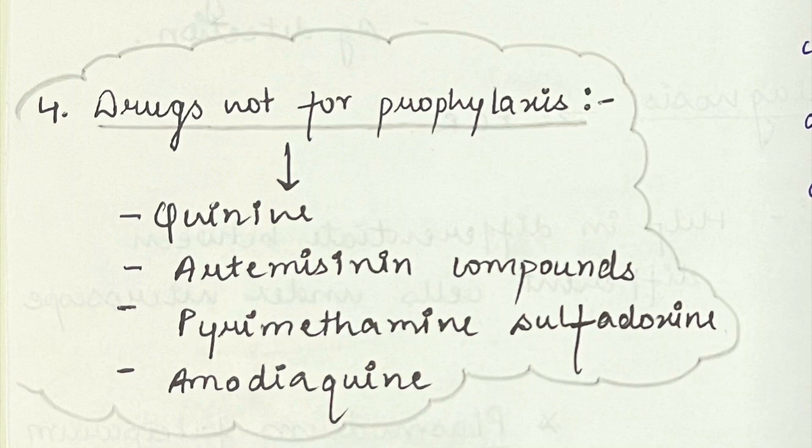The drugs used for prophylaxis are chloroquine, mefloquine, atovaquone, and doxycycline. But drugs which cannot be used to prevent malaria include quinine, artemisinin compounds, pyrimethamine sulfadoxine, and amodiaquin. For the acute attack — where a person gets chills, shivering, high fever, and sweating, then returns to normal temperature — we give chloroquine. But for the radical cure, meaning completely eradicating the Plasmodium parasite from our body, we can use chloroquine and primaquine.